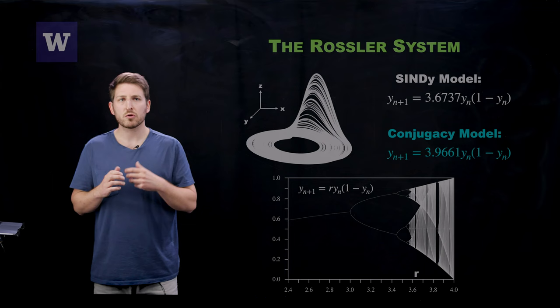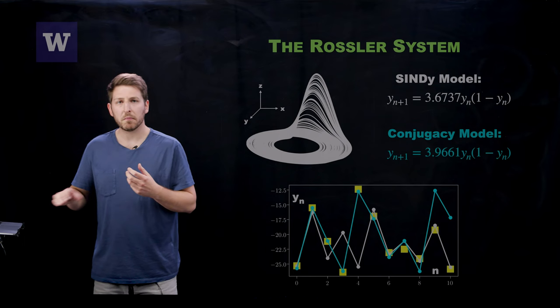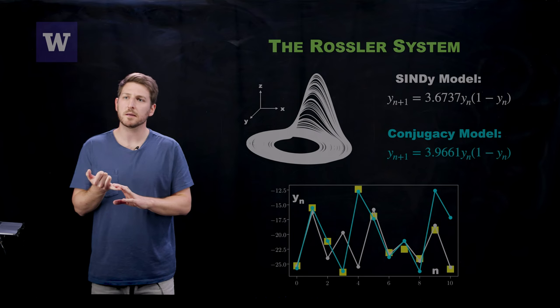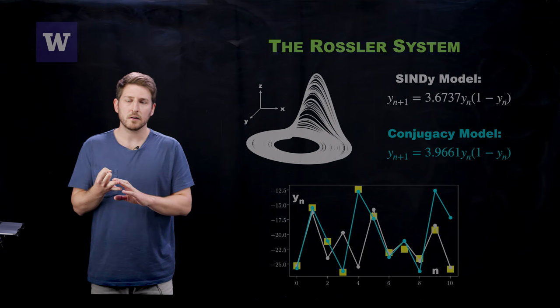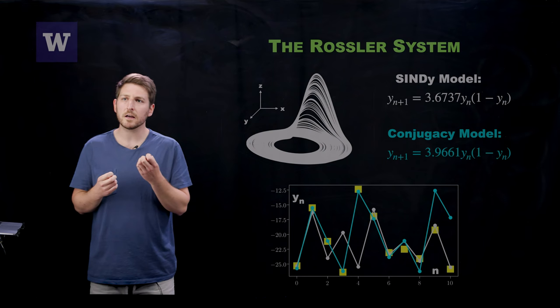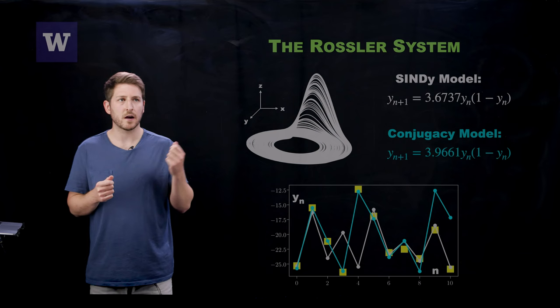So again, which one is better? Well, we can compare these two models by doing some forecasting. And so what you're seeing here is the result of forecasting both the actual Rössler system just by simulating the ODE, that's the yellow squares, the SINDy method given by the white dots and lines, and the conjugacy model given by the teal dots and lines. And you can see that the SINDy model is very inaccurate as it falls off after about one iteration in this discovered mapping.